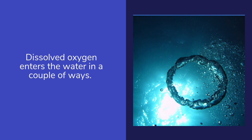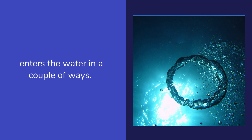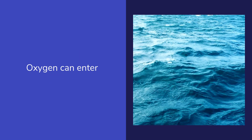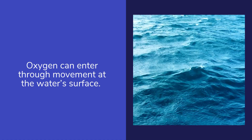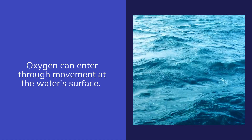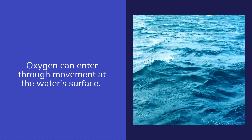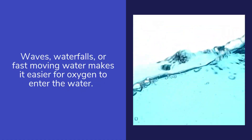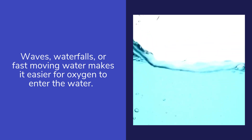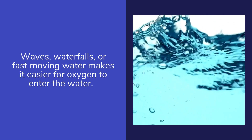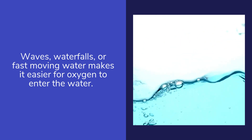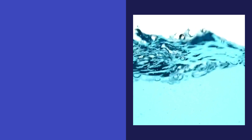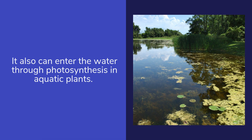Dissolved oxygen enters the water in a couple of ways. For example, oxygen can enter through movement at the water's surface. Waves, waterfalls, or fast-moving water make it easier for oxygen to enter the water. It can also enter the water through photosynthesis in aquatic plants.